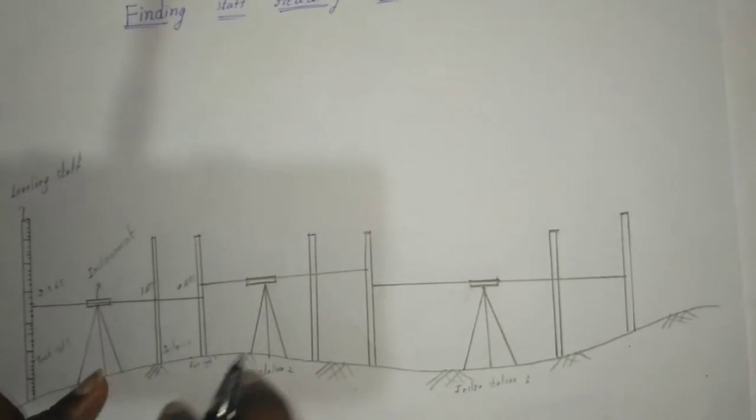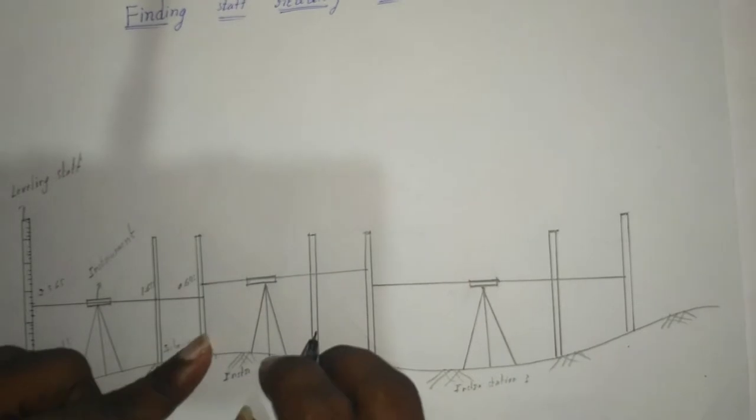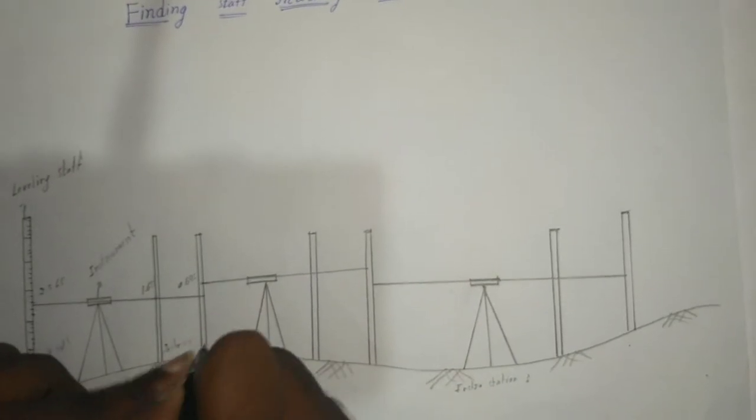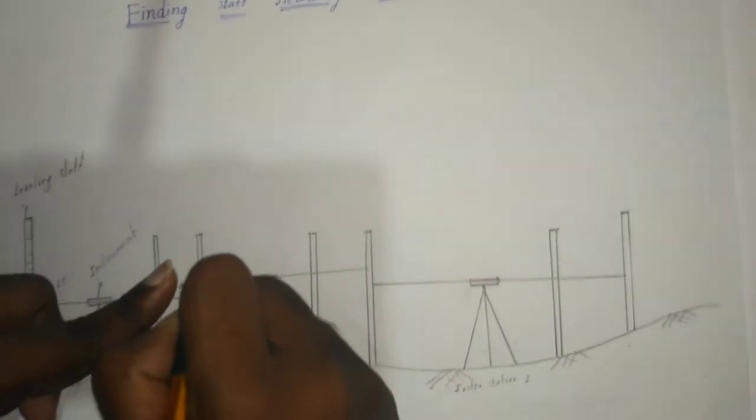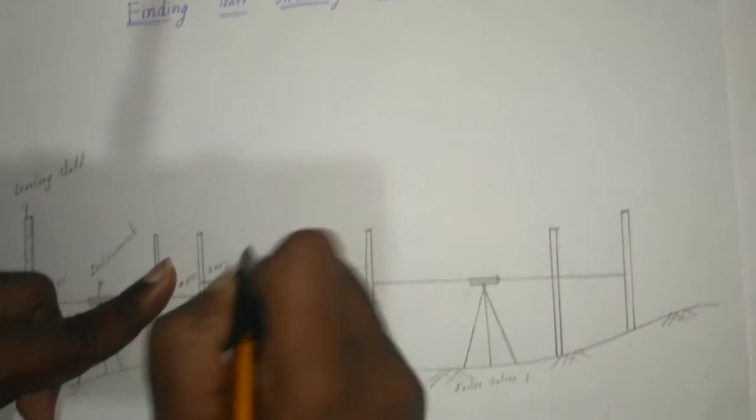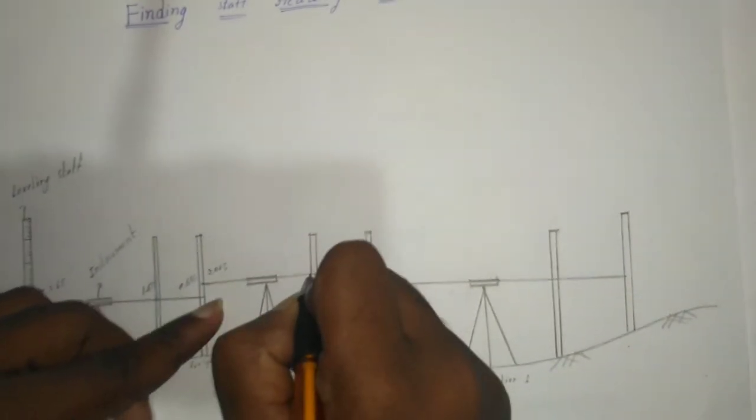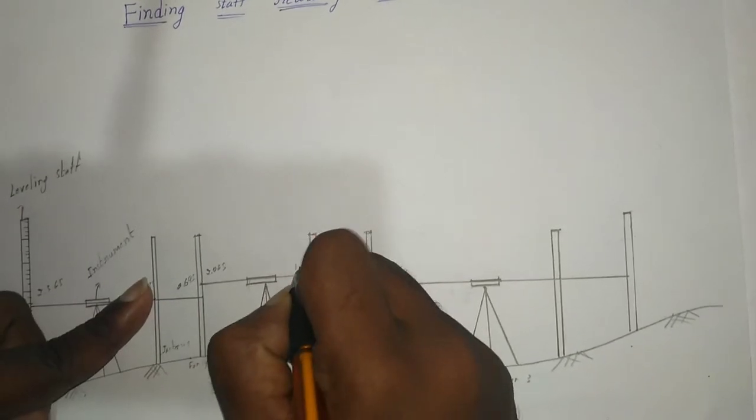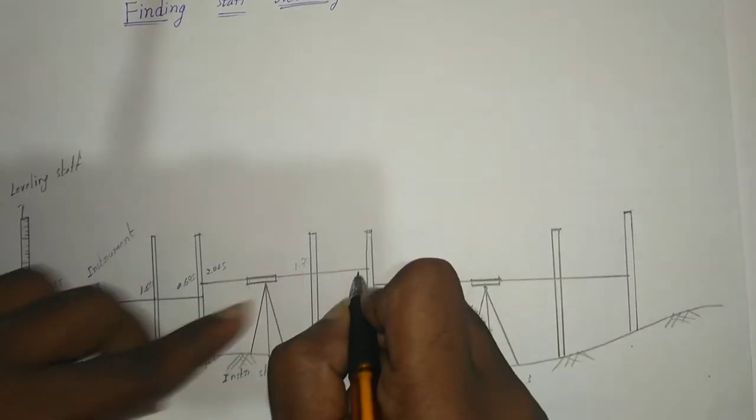After this, in the instrumentation here to here, then again take the reading of the staff. Then note it has 2.065, and it is a zoom.